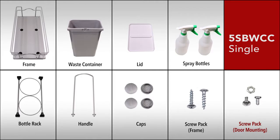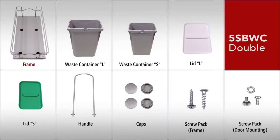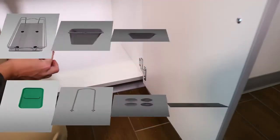For the double unit, you'll find a frame, waste container large, waste container small, lid large, lid small, handle, caps, screw pack frame, and screw pack door mounting. We will not be demonstrating a door mounting application in this video.